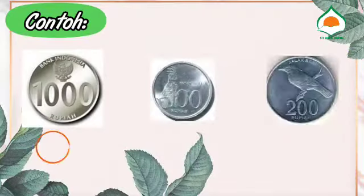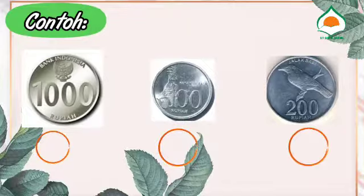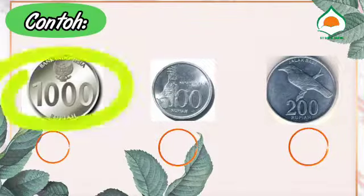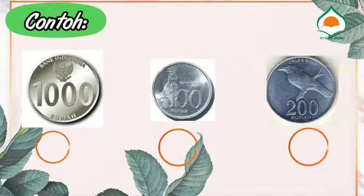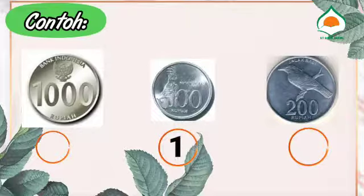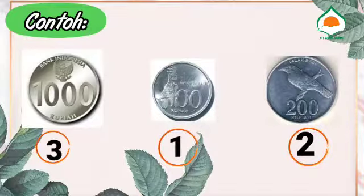Urutkan pecahan uang berikut mulai dari yang nilainya terkecil, dengan memberikan angka 1, 2, dan 3 di lingkaran yang tersedia. Terdapat 3 keping uang logam bernilai 1.000 rupiah, 100 rupiah, dan 200 rupiah. Urutannya: yang pertama 100 rupiah, yang kedua 200 rupiah, dan yang ketiga 1.000 rupiah.